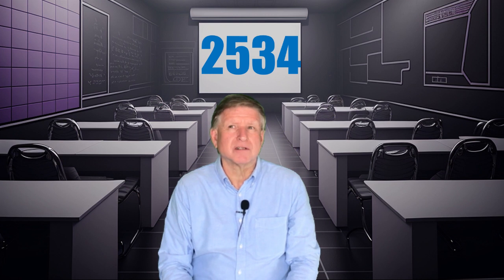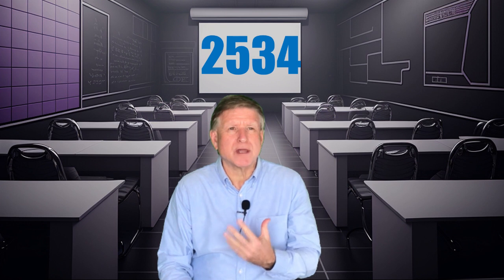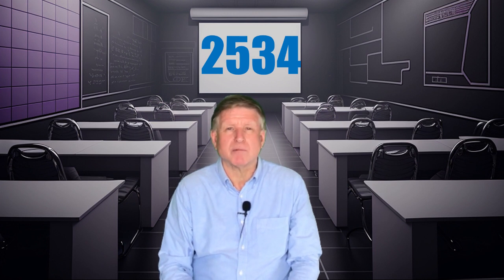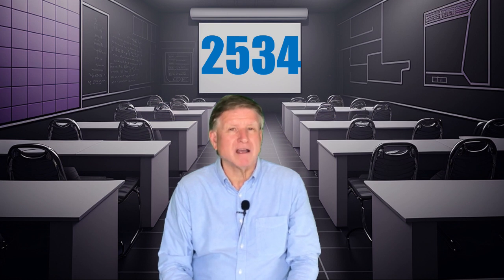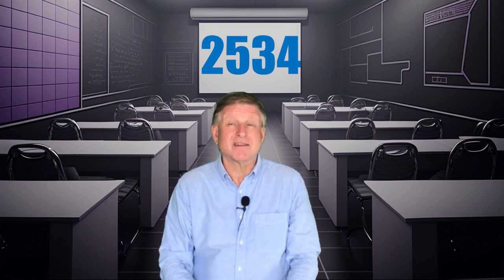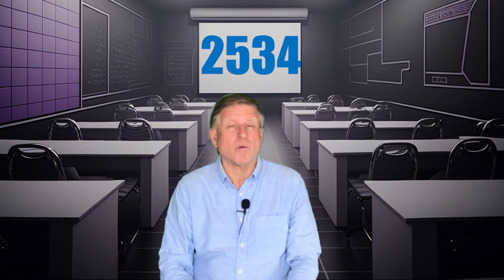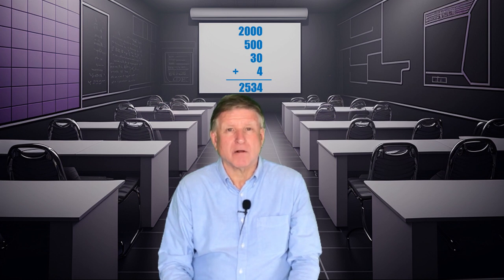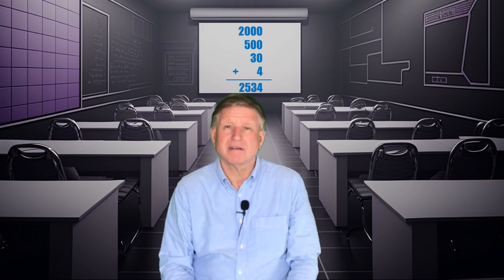Let's think of a bigger number: 2534. The way I say it — two thousand — you can tell that the two represents two thousands, and it's because of its position in that number. The five represents five hundred, the three represents three tens, and the four just represents four, in the ones position.